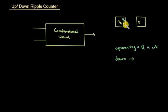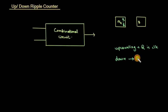For down counting, Q-bar is used as the clock to the second flip-flop. So the clock is taken from Q-bar for down counting.